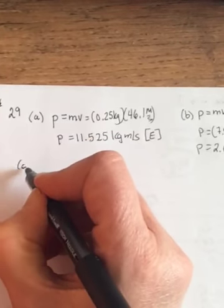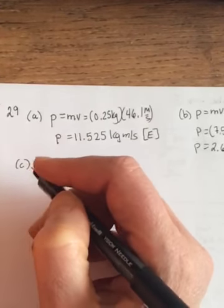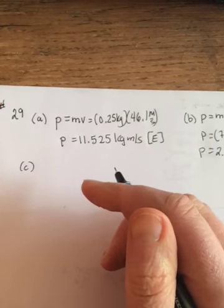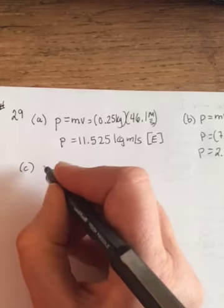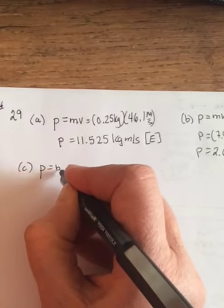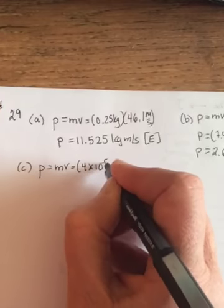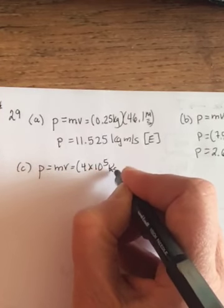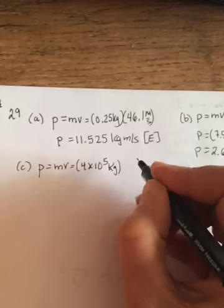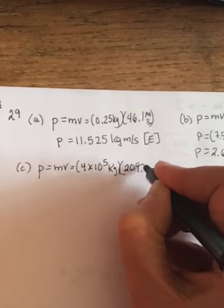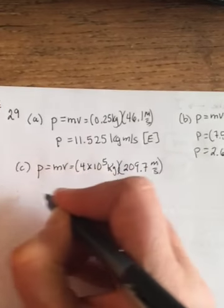Part C says, four times 10 to the fifth kilogram jet is traveling 755 kilometers per second. So P equals MV. Four times 10 to the fifth kilograms. 755 when you switch it to meters per second, 209.7, I think it's probably six repeating.